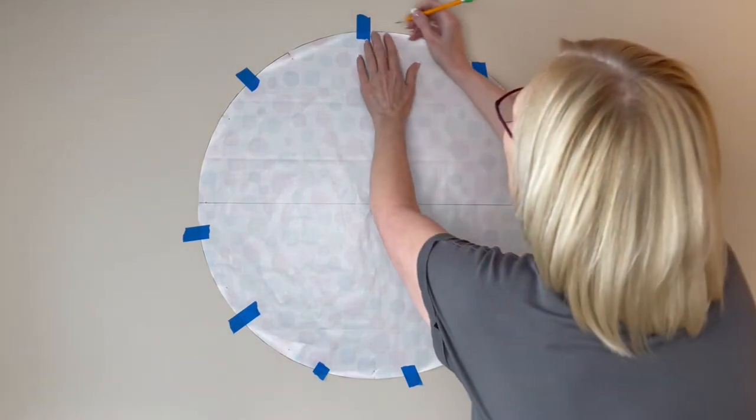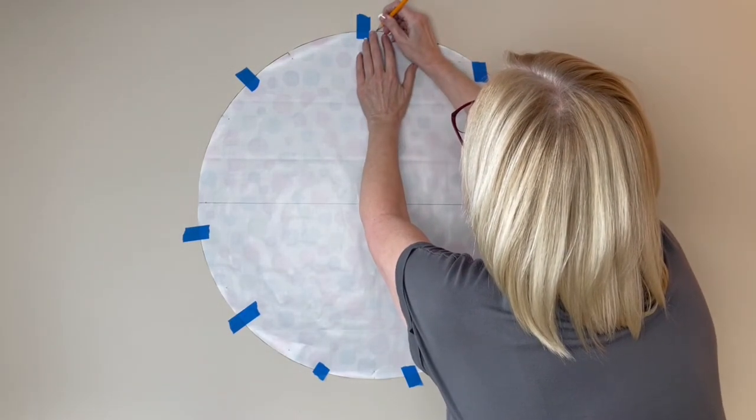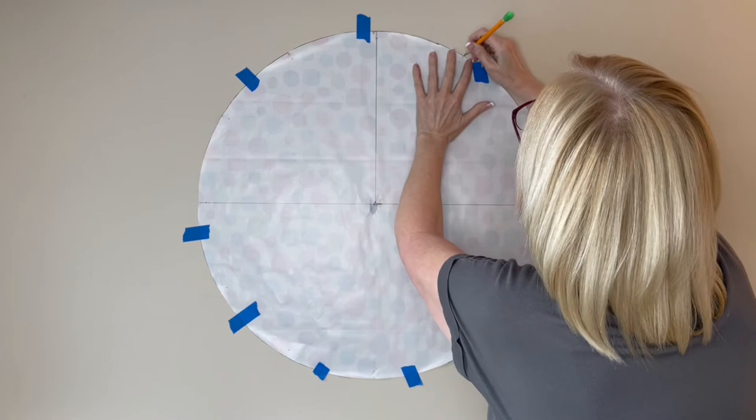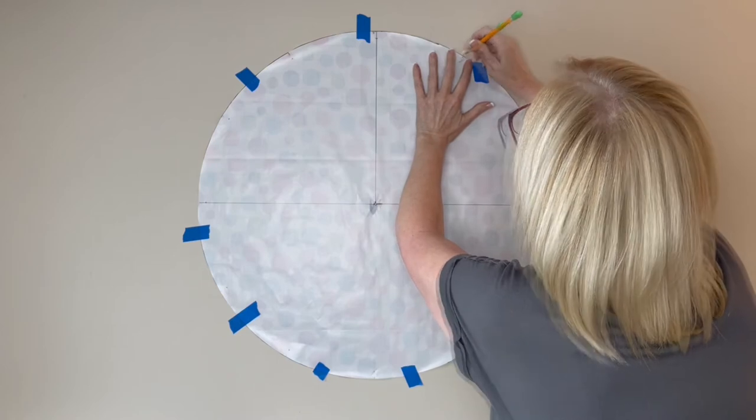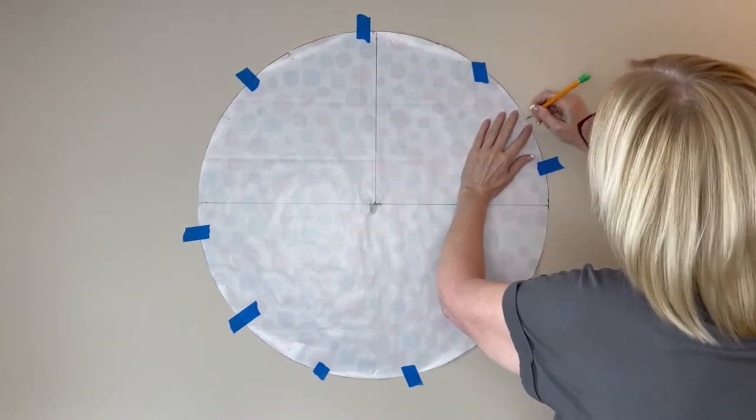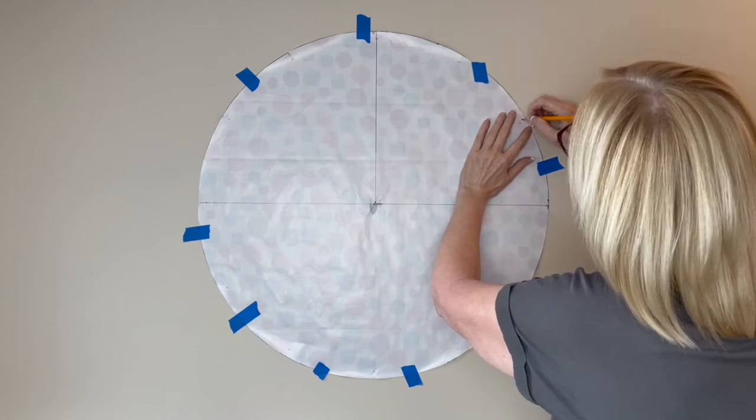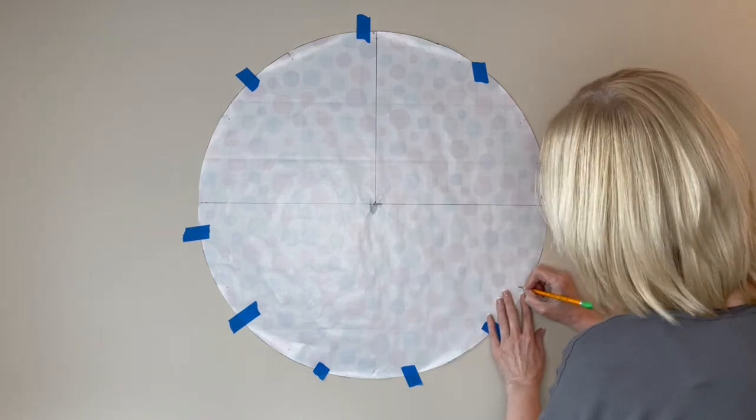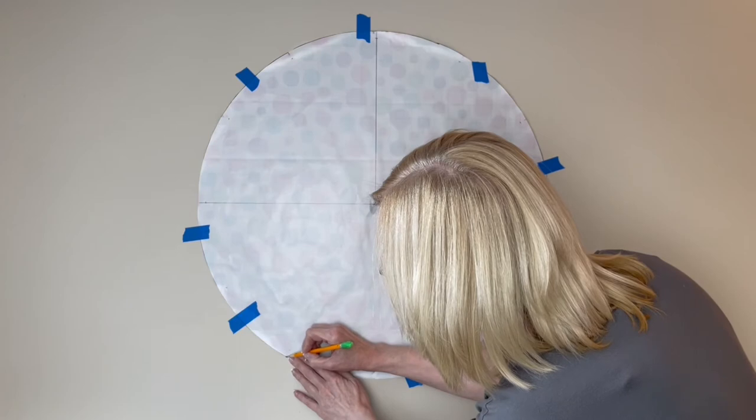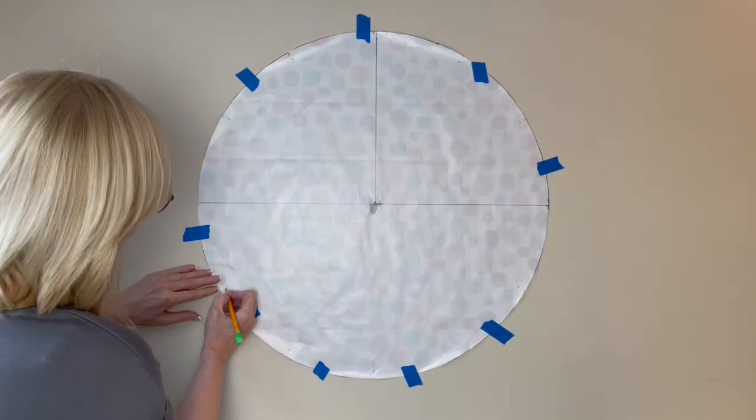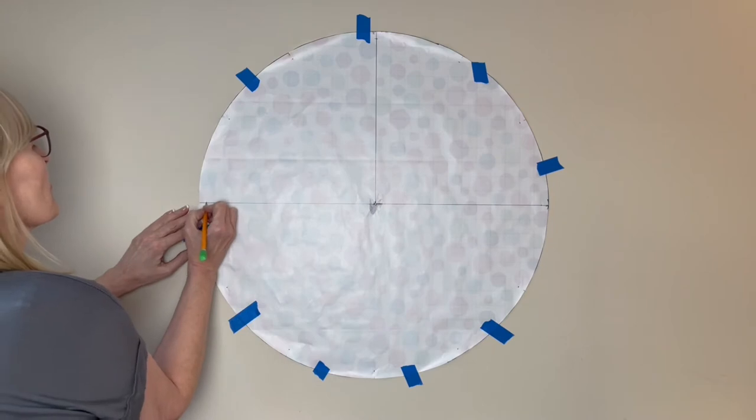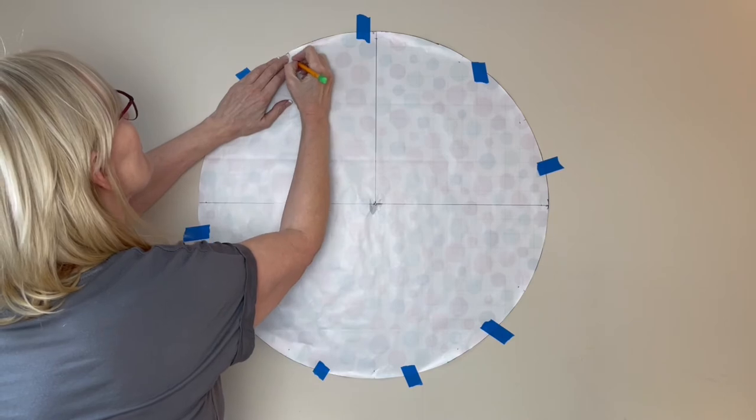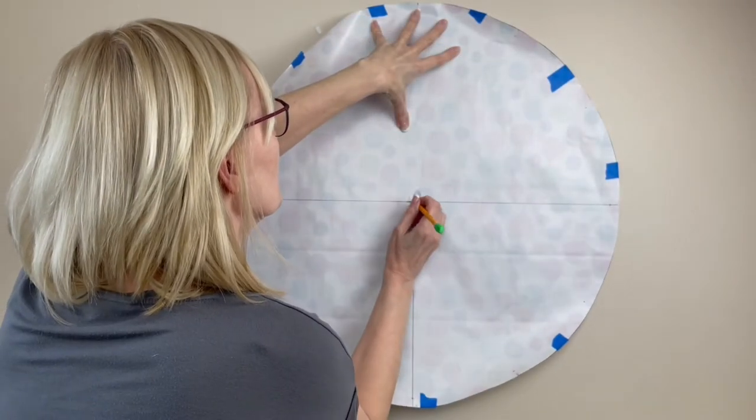Using a pencil, make a mark through each one of the holes that you previously made and on the corresponding edge above it. 24 in all. These markings will show us where to place the Velcro. Make a mark at the very center for the clock.